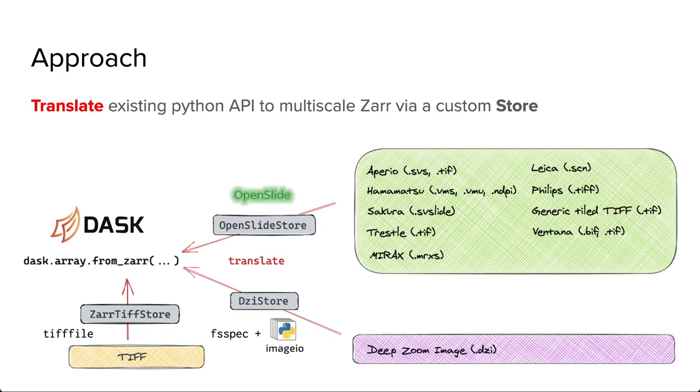The open slide store depicted here wraps an open slide Python object, which can read a handful of both proprietary and open image formats. The DZI store adapts a deep zoom image format into a multi-scale Zarr that also Dask can understand. And finally, TiffFile exposes a Zarr TiffStore object, which exposes a multi-scale Zarr for any format that TiffFile can read as well.